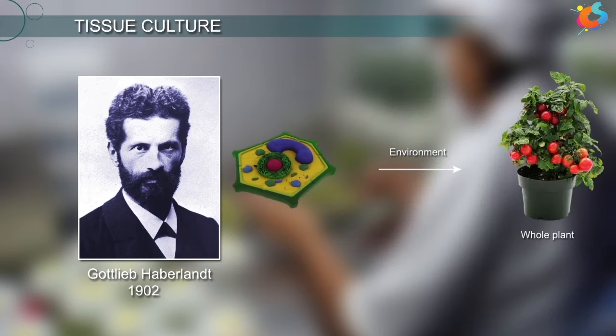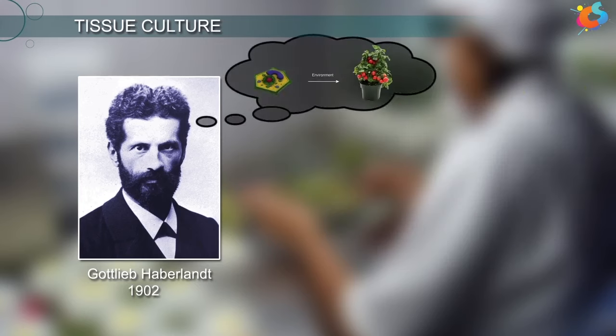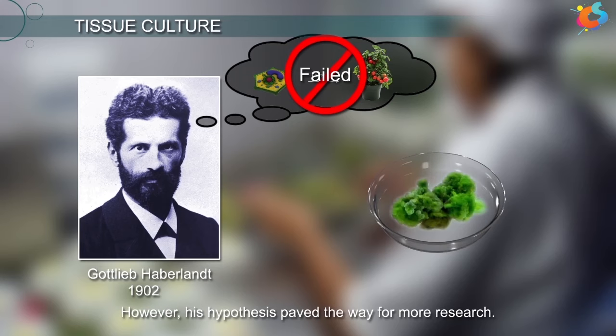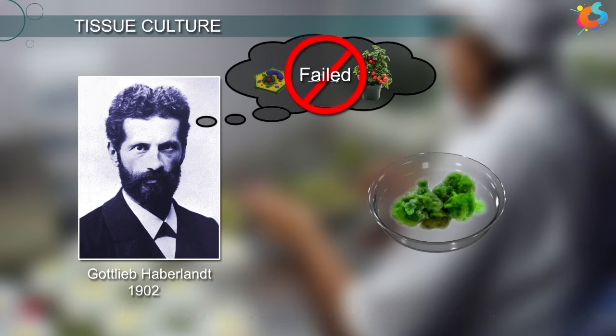Cells in his experiment increased in size but failed to divide, due to which his predictions failed. However, his hypothesis paved the way for more research, and he is thus regarded as the father of tissue culture.